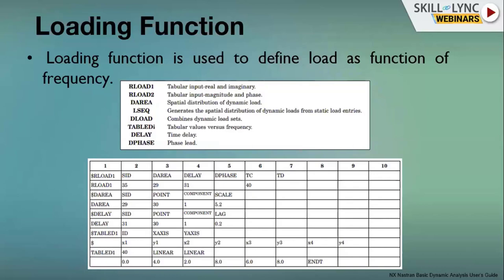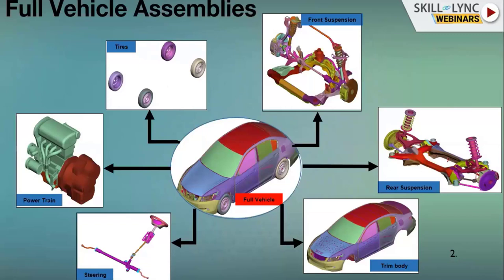A full vehicle assembly is divided into subsystems: the trim body includes all closures, front and rear modules, seats, and fuel tank assemblies. When other subsystems are attached to the trim body, it becomes the full vehicle. These subsystems include rear suspension with rear cradle/subframe, front suspension with front subframe, tires, powertrain, and steering. Steering is sometimes included with the trim body but is modeled separately for certain analyses.